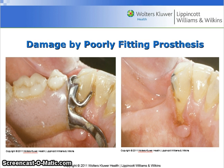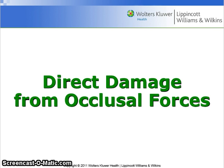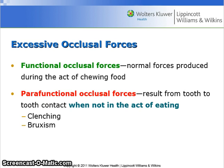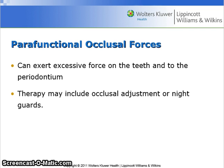Faulty removable prostheses can cause damage to the gingival tissue by impingement or because of biofilm accumulation. Here are examples of damage done to the tissues by a poorly fitting partial denture. Regarding direct damage from occlusal forces: excessive occlusal forces include functional occlusal forces, which are normal forces produced during chewing, or parafunctional occlusal forces, which result from tooth-to-tooth contact when not eating, such as during clenching or bruxism. Parafunctional occlusal forces can exert excessive force on the teeth and periodontium. Therapy may include occlusal adjustment or night guards.